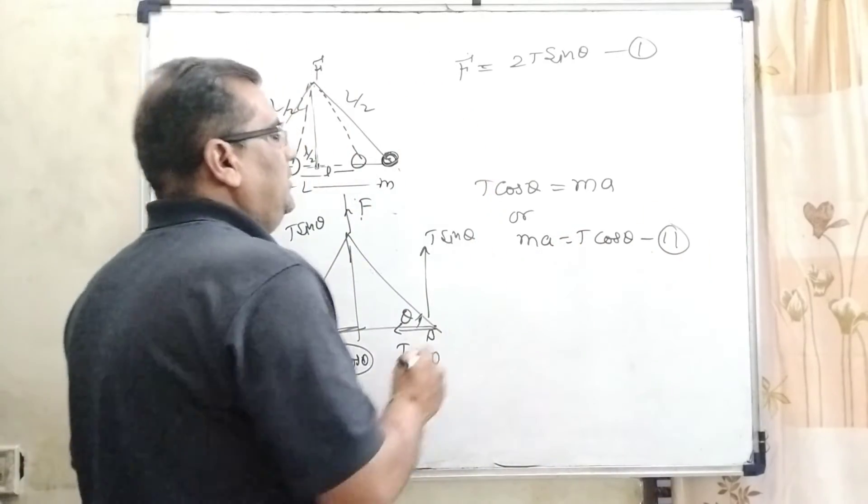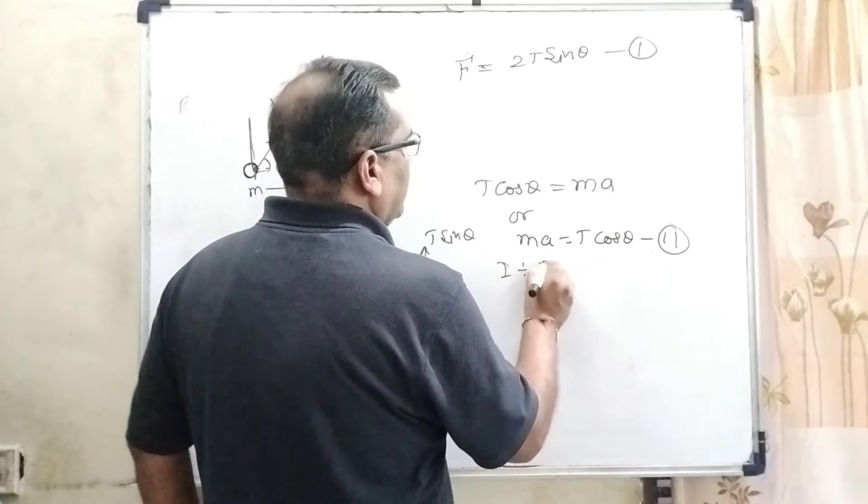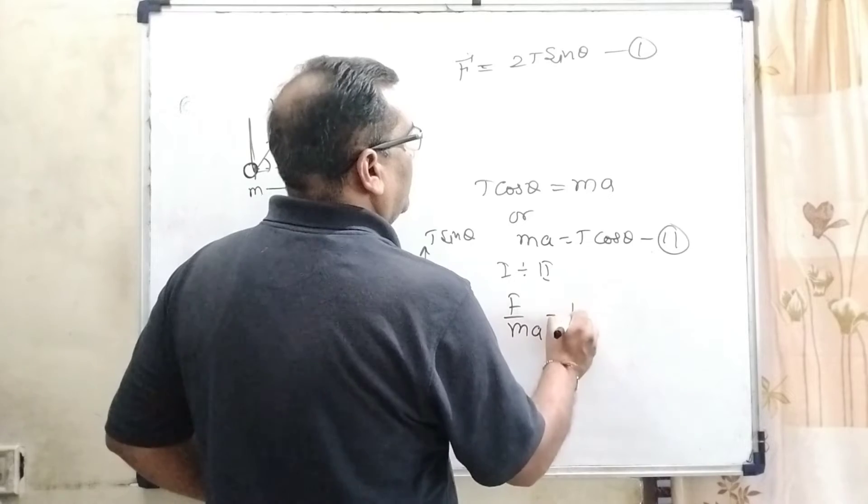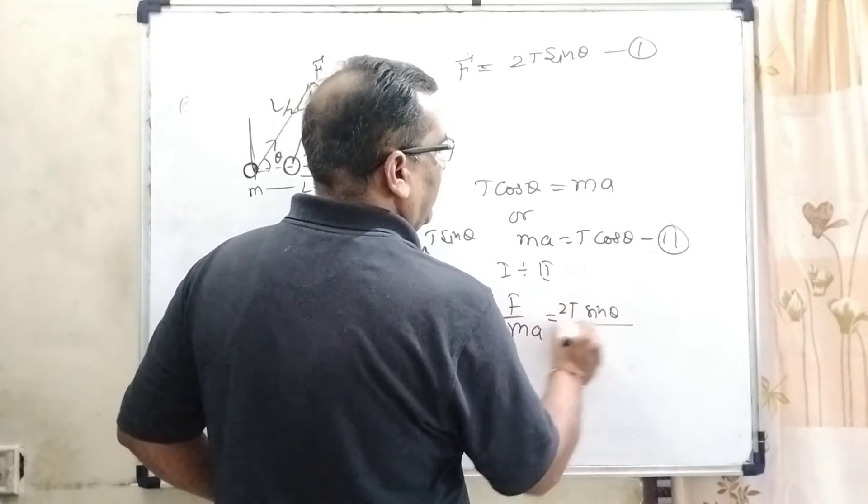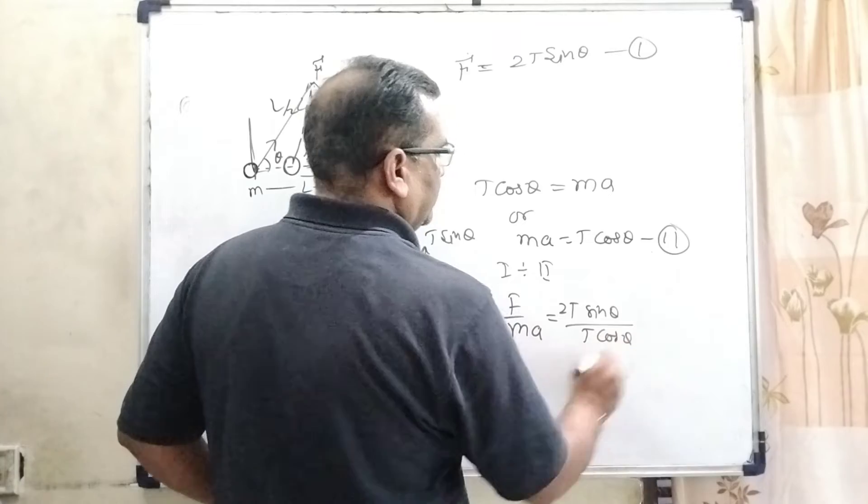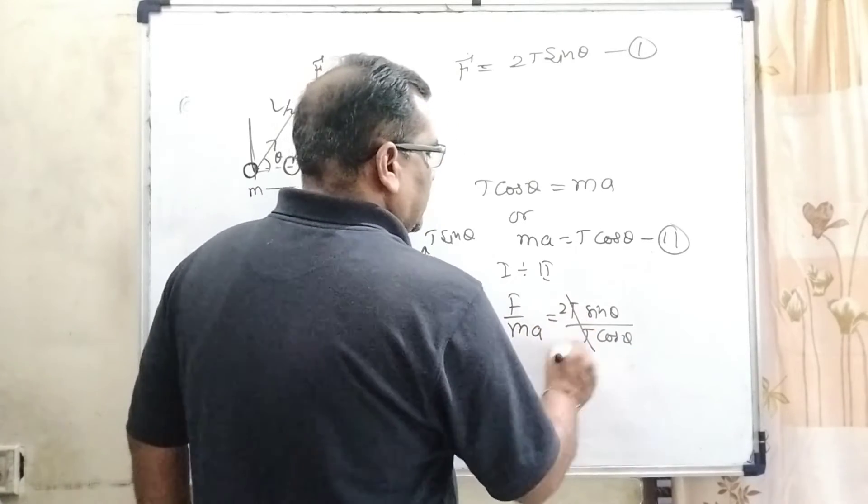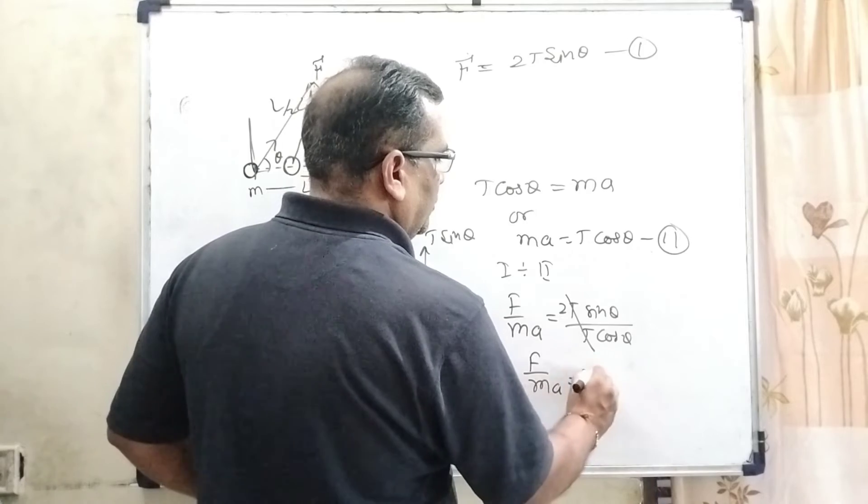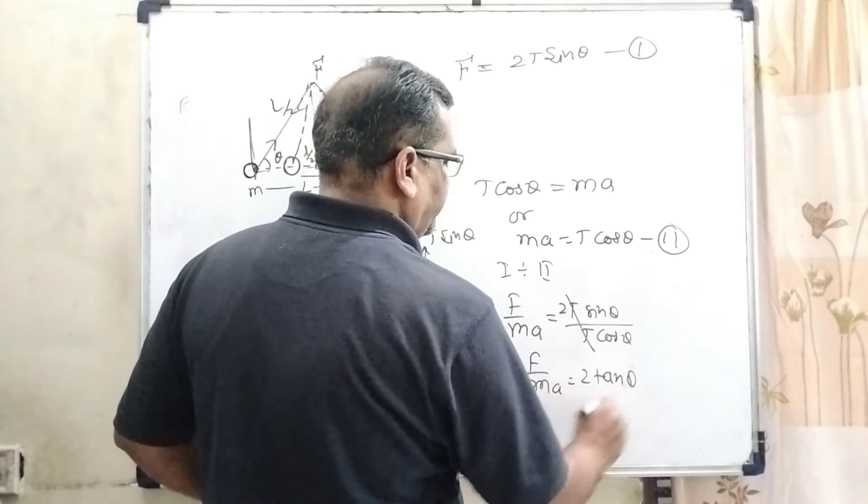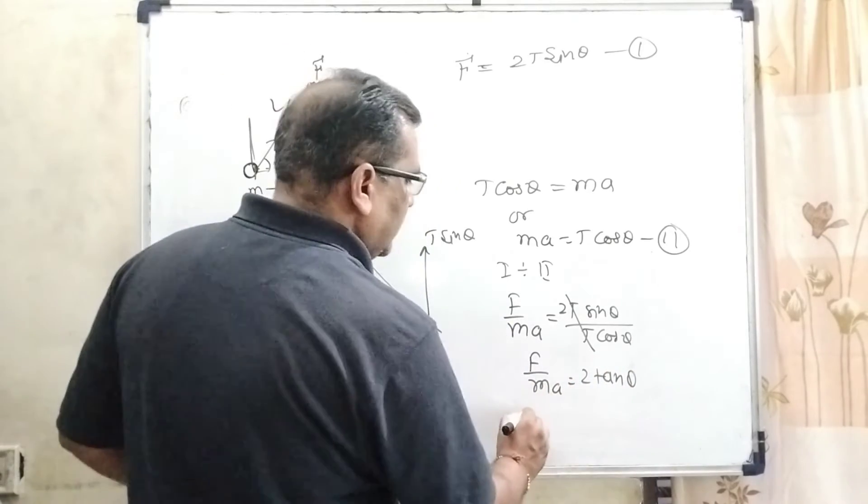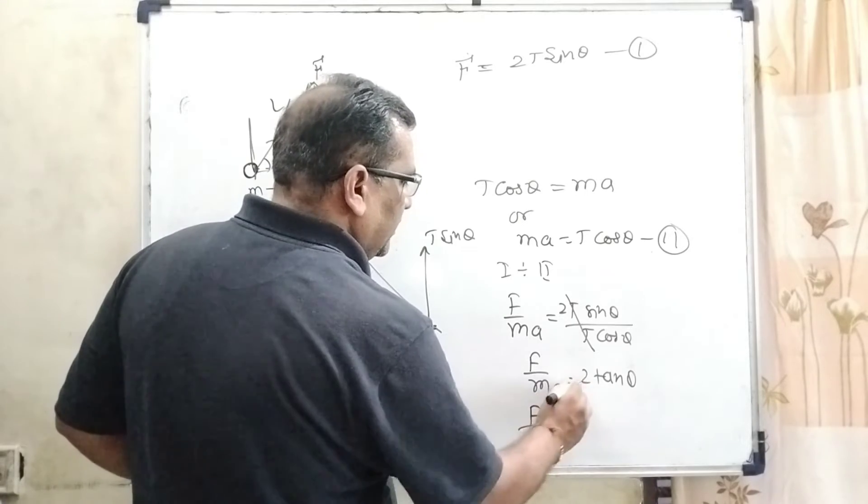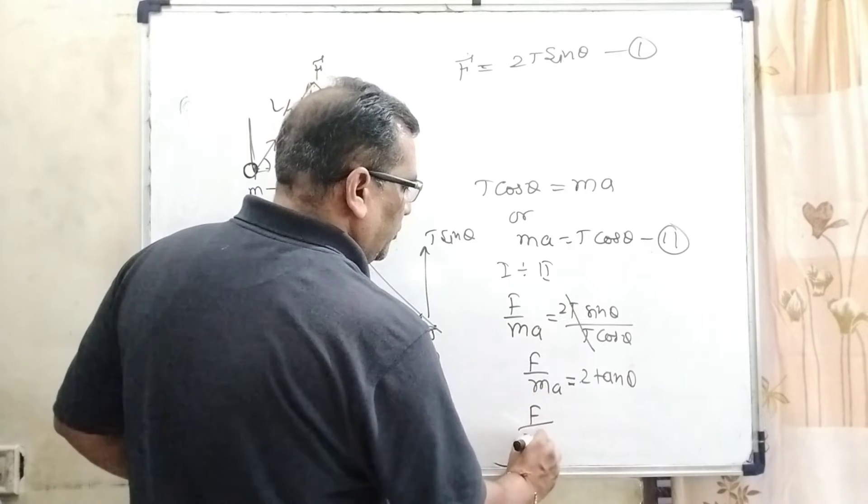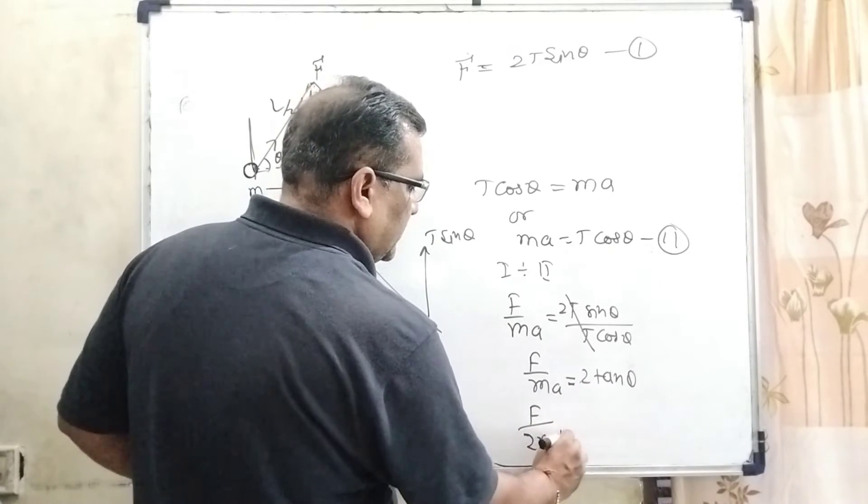Now first divided by second. Then F by M A equals 2 T sin theta upon T cos theta. T cancel out. Then F upon M A equals 2 tan theta.